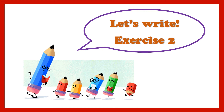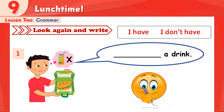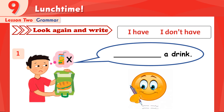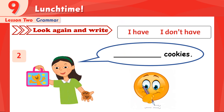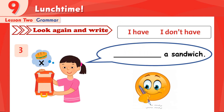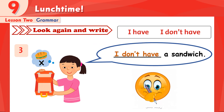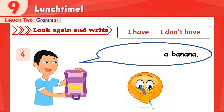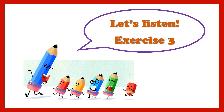Now we come to Exercise 2 — Let's write. Get ready with your pen and paper. Now you look again and write — I have or I don't have. Picture 1: I don't have a drink. Well done. 2: I have cookies. Good job. 3: I don't have a sandwich. Very good. 4: I have a banana. Well done. You did a really nice job in Exercise 2!